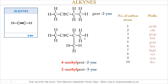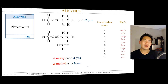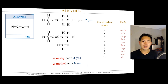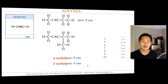If I had numbered it from the other way, I would have ended up with 2-methylpent-3-yne. So I have two choices: the first or the second. To pick the best name, the only differences are that the numbers are slightly different. In the first one, four plus two makes six. In the second one, two plus three makes five. When I have a choice like that, I pick the one that gives me the lowest number, so 2-methylpent-3-yne is the more appropriate name.